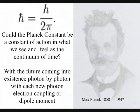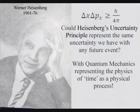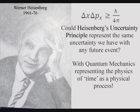The Planck constant represents a constant of action in a geometrical process that we see and feel as the passage of time. At the smallest scale of this process, Heisenberg's uncertainty principle represents the same uncertainty we have with any future event.